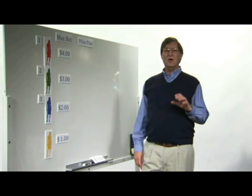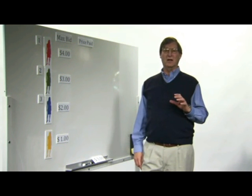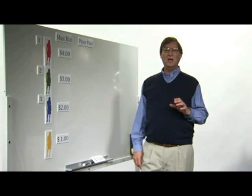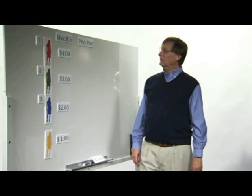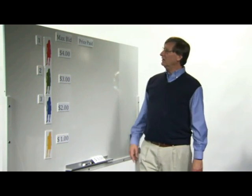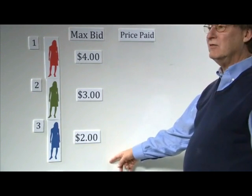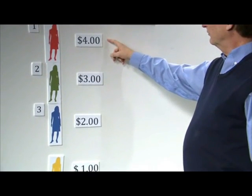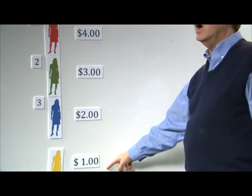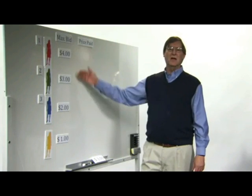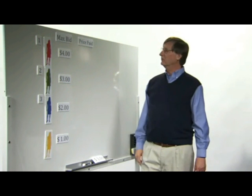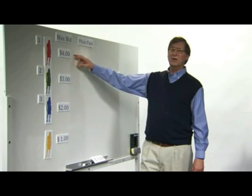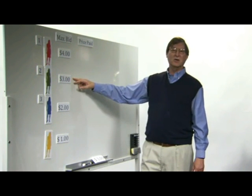The auction is an auction for clicks, so advertisers only have to pay when they receive a click. In this particular case, we have our four advertisers with different bids: four, three, two, and one. The ads are ordered in terms of those bids — the highest bidder gets the first position, the second highest bidder the second position, and so on.